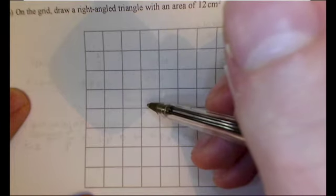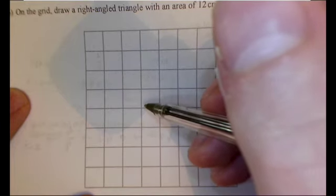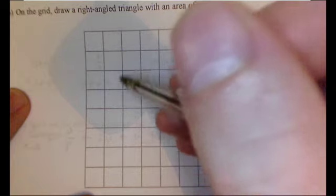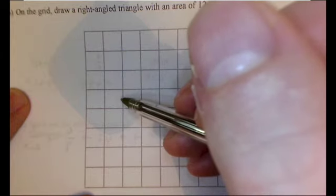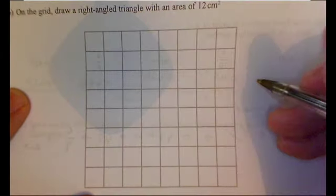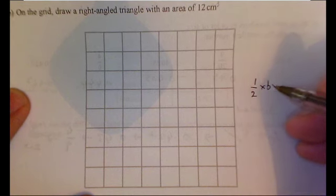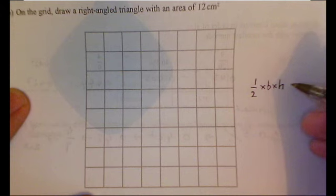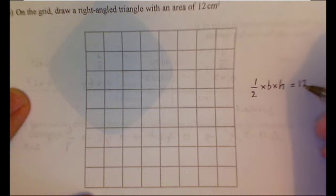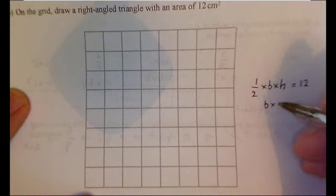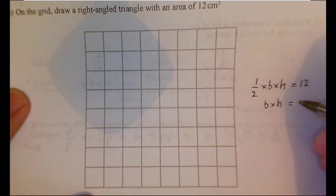So what I could do is, actually, if I write down the formula for that, maybe a method would become clear. So a half times by the base times by the height has got to equal 12. Now if I times both sides by 2, I'll get rid of that half. So the base times by the height has got to be 24.